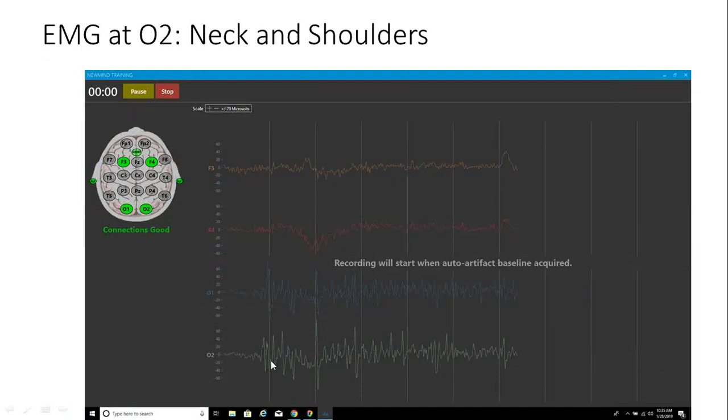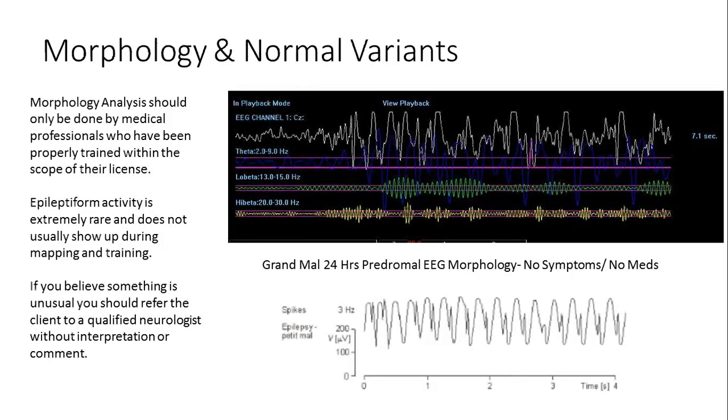Here's neck and shoulders at O2. You can see F3 and F4 look pretty nice. But compare this to that spiky biphasic compressed pattern of EMG. That's your EMG in the back at O1 O2. I thought I'd pull out the morphology of somebody who was about to have a grand mal in about 24 hours, but they had no symptoms. They're predromal. Here's that pattern we saw of spike and wave. If you look at them you can see how similar they are.